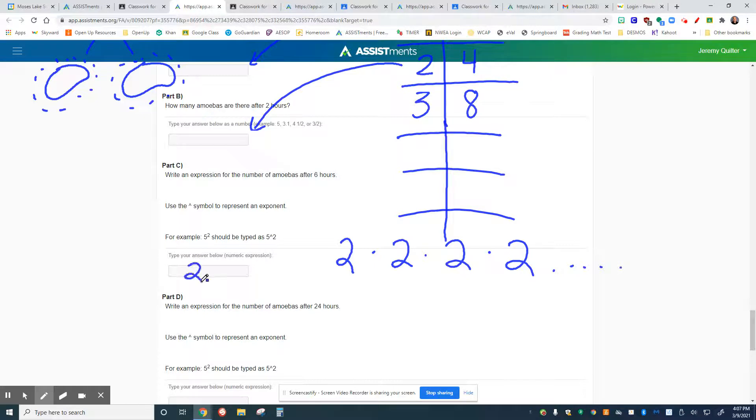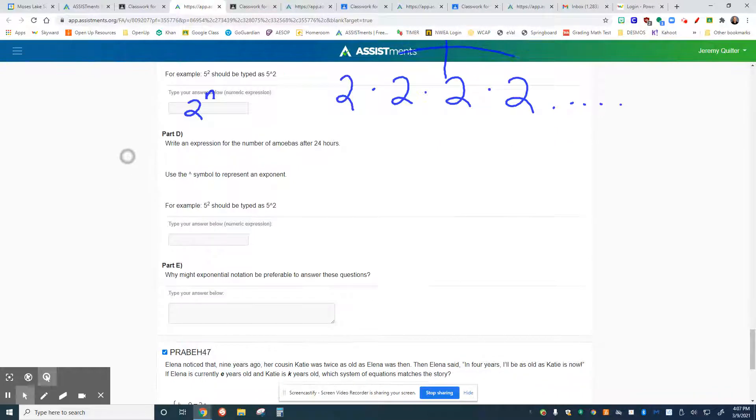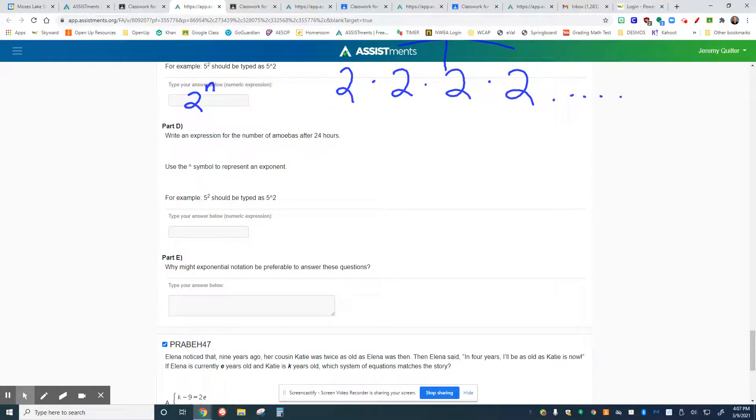And so how would we represent that for part C? I'll give you that hint that the base is two, but you're going to have to figure out what that value will be for N. If N represents any number of hours that that amoeba is alive. Part D, you're going to look at the same thing, but after 24 hours, remember that right here.